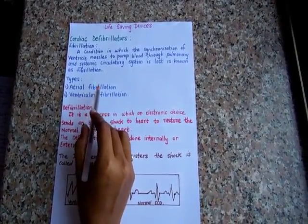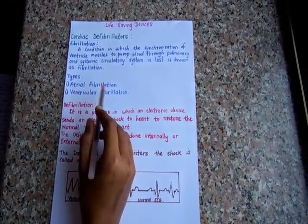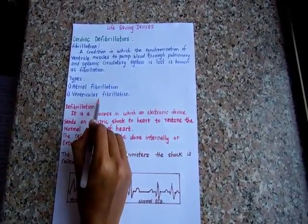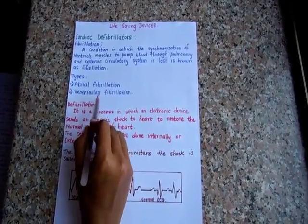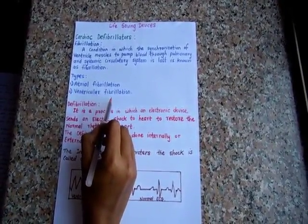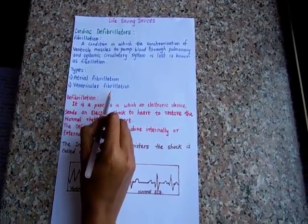The fibrillation of atrial muscles is called atrial fibrillation and the fibrillation of ventricles is called ventricular fibrillation. Even with the atrial fibrillation, the blood circulation can be maintained but not that efficiently. Ventricular fibrillation is far more dangerous because if this happens, the person may die within few minutes.